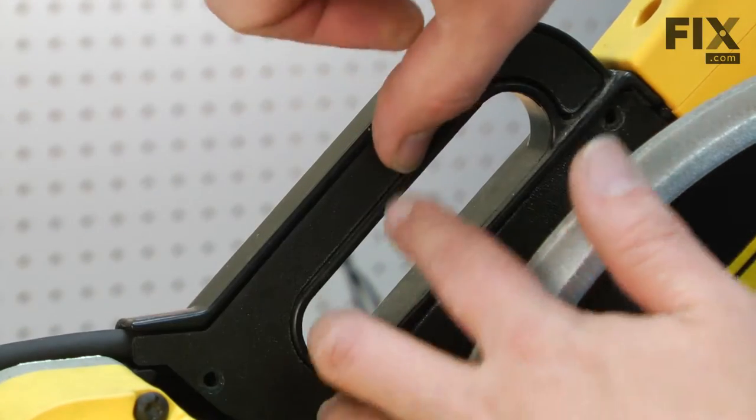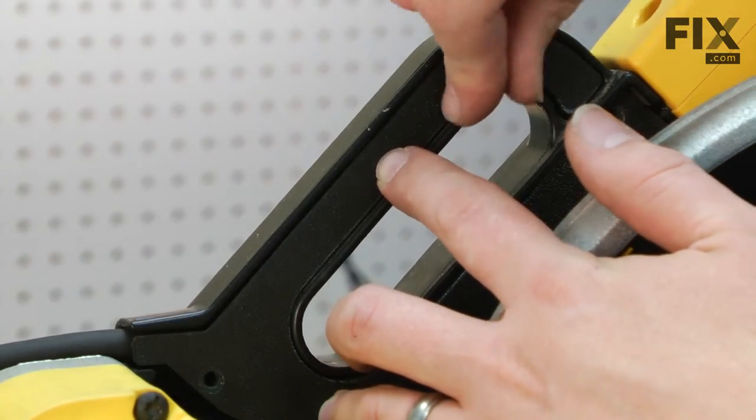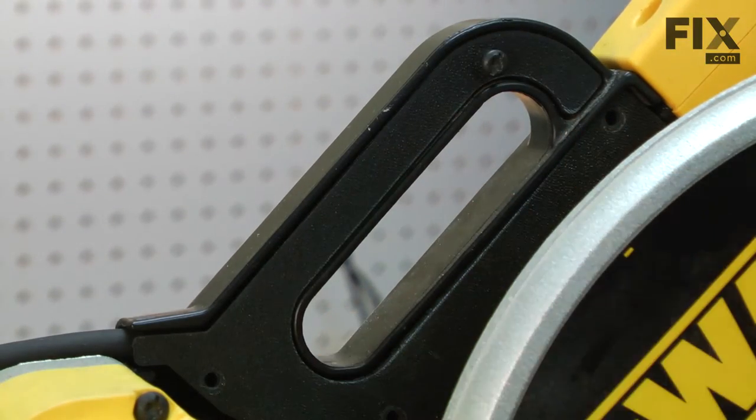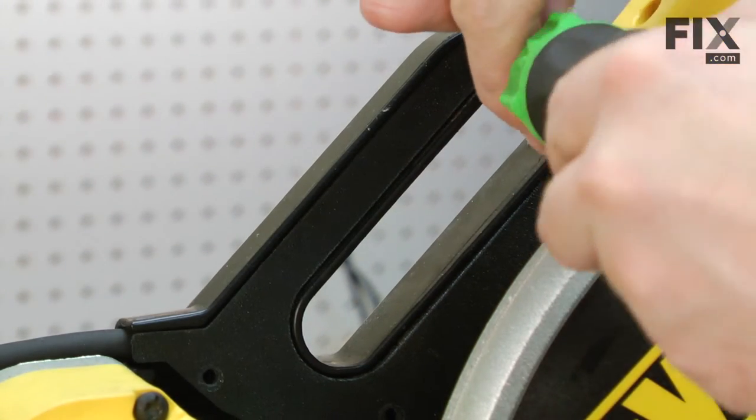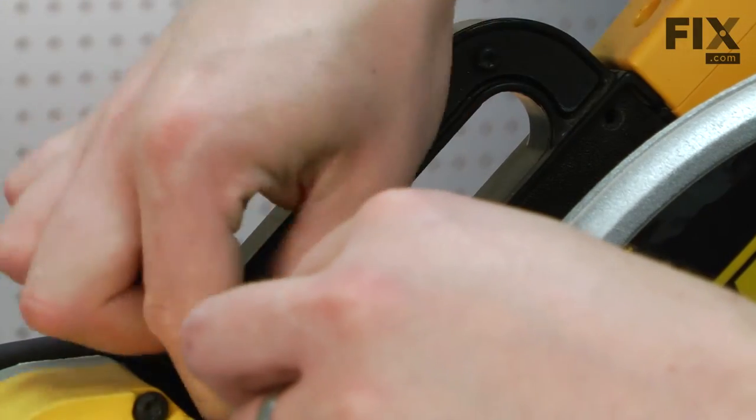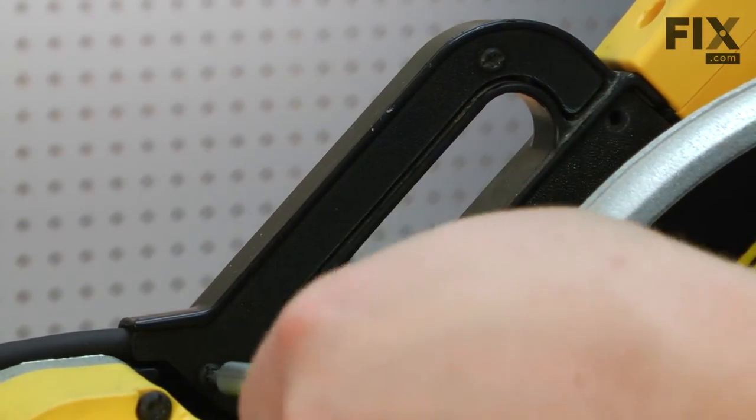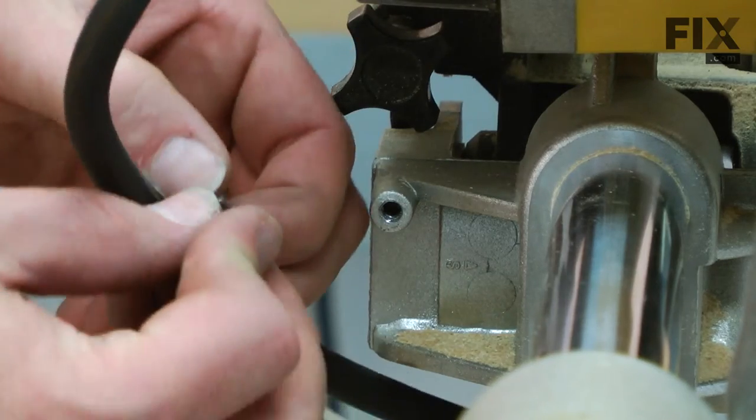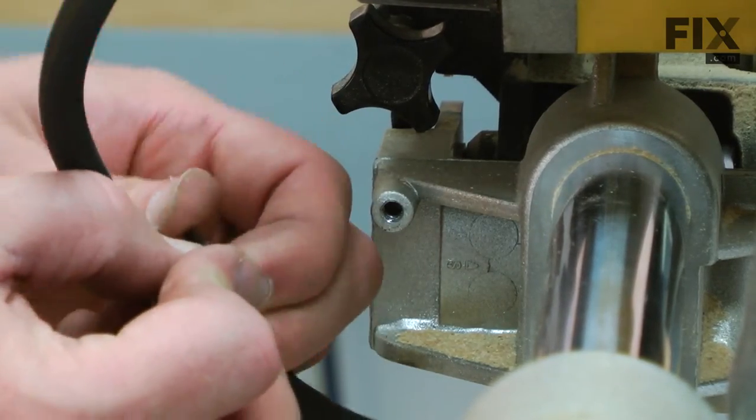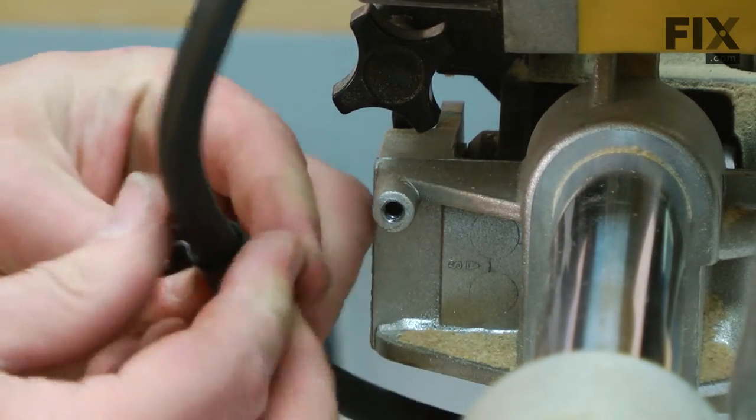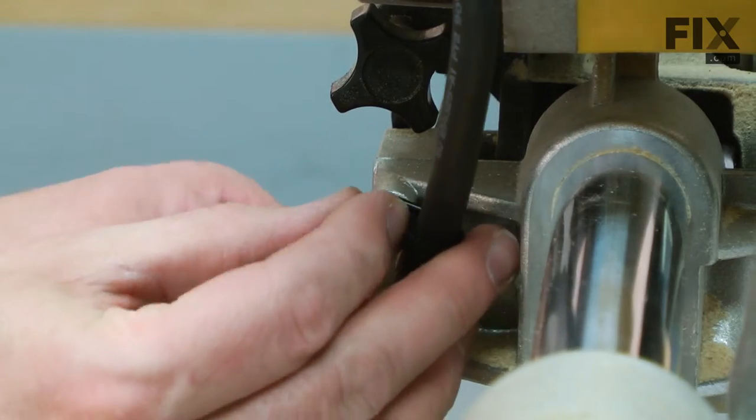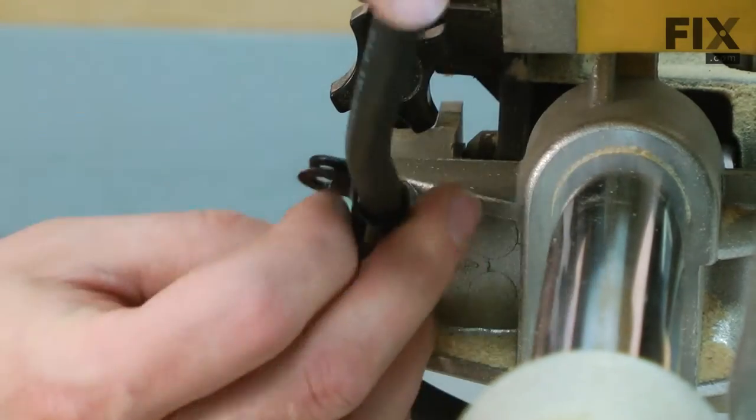Now, I'll reinstall the upper handle cover. Now, I'll reinstall the cord clip. I slide it onto the cord, and then pull any slack that's in the cord out before attaching the clip to the body of the saw.